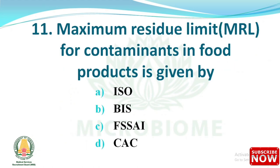Next question: Maximum Residue Limit (MRL) for contaminants in food products is given by — options: (A) ISO, (B) BIS, (C) FSSAI, (D) CAC. The right answer is option D, CAC — the Codex Alimentarius Commission.